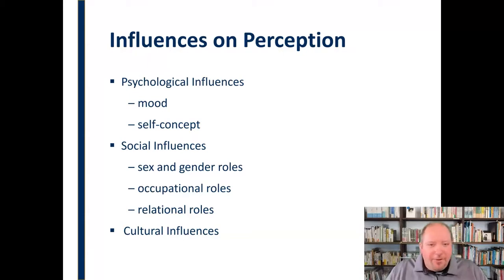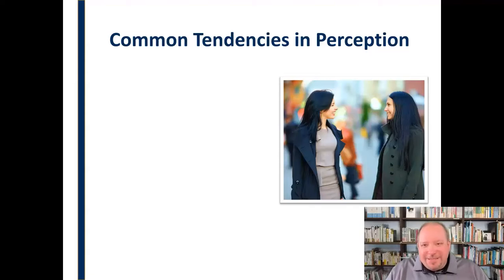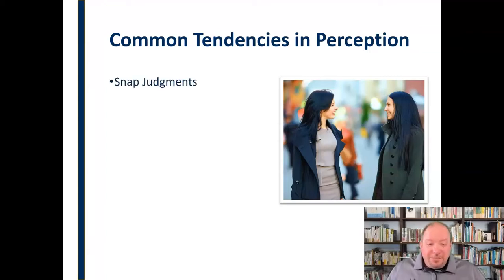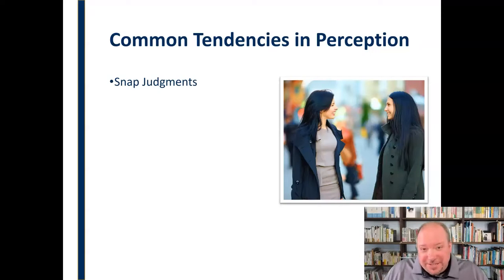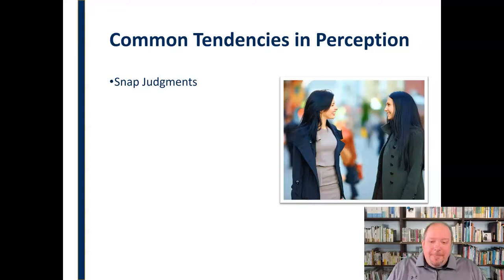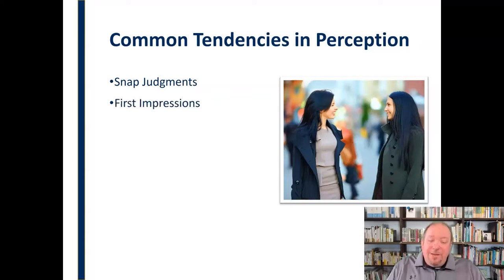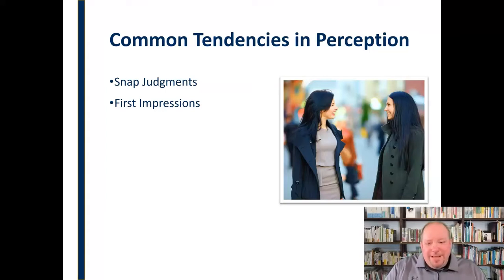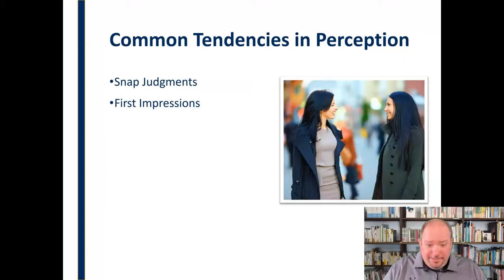Now that we know the influences, we also have some common tendencies in perception to be cautious of. We tend to make snap judgments — it's part of a survival instinct, but we've got to be careful and allow for new information that may change our interpretation. We also tend to be overly reliant on first impressions. The moment you meet somebody isn't always representative of who they are all the time — someone might make a great first impression but turn out to be a jerk over time, and it takes us a while to let go of that initial impression.